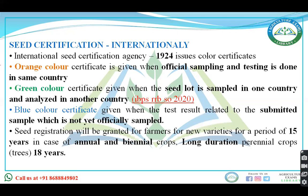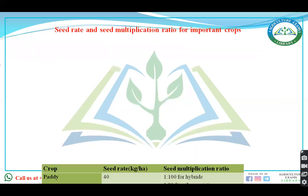Remember: seed resistance will be granted to farmers for new varieties for a period of 15 years, and for long-duration perennial crops it is 18 years. Seed multiplication ratio data is also asked in examinations. Seed multiplication ratio means how many seeds can be produced from a single seed. For paddy, the seed rate is 40 kg/ha and the seed multiplication ratio is 1:200 for hybrids and 1:80 for varieties.